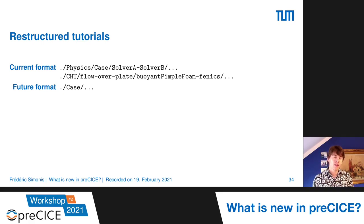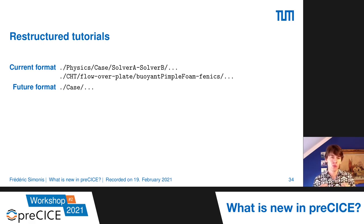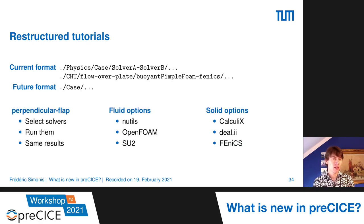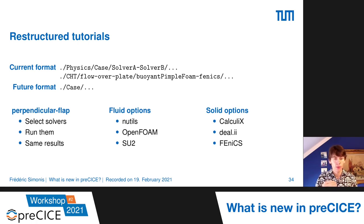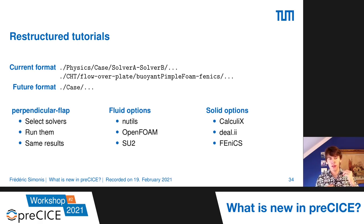What we want to do in the future is boil this down to a specific case. The future format will be a flat list of case folders, each containing all files required to run that specific case. For example, the perpendicular flap case will contain options for the fluid side — fluid-fenics, fluid-openfoam, fluid-su2 — and for the solid side — solid-calculix, solid-su2, solid-fenics. You select one solver per participant, run them, and they produce the same results if they model the same physics.